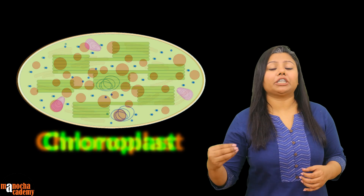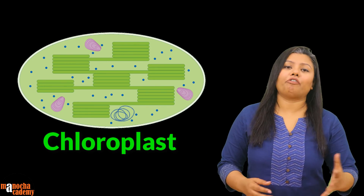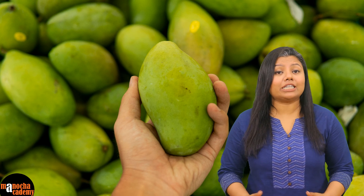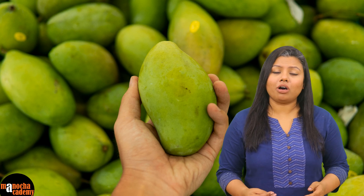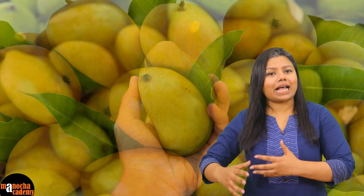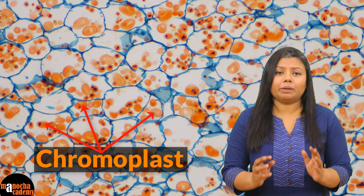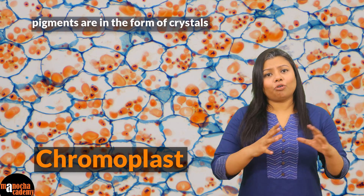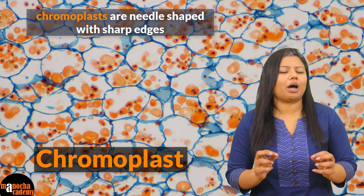Chromoplasts can get converted into chloroplasts or they can be formed from chloroplasts or leukoplasts. You must have seen that a mango when it is raw, or any other fruit when it is raw, it is green in color. But slowly as it ripens, it becomes colored — either orange, red etc. — and this is because the green color, which is because of chlorophyll or chloroplasts, changes into chromoplasts. Usually the pigments inside the chromoplasts are stored in the form of crystals and that is why chromoplasts are mostly needle shaped with sharp edges.